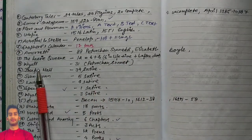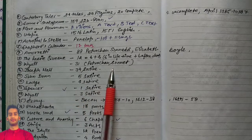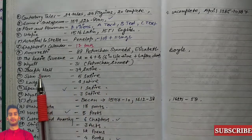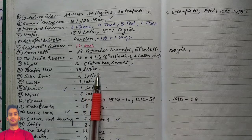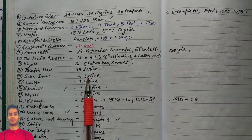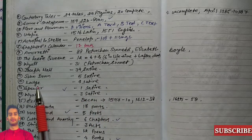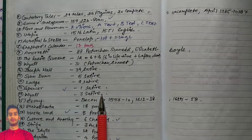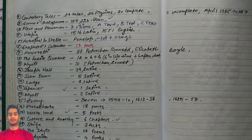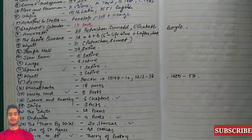Wyatt wrote 31 Petrarchan sonnets. Joseph Hall wrote 34 satires and John Donne wrote five satires. Thomas Lodge wrote four satires, Spenser wrote one satire, Wyatt wrote three satires in his lifetime.